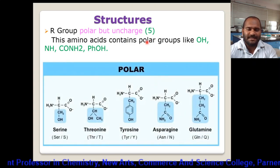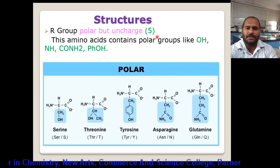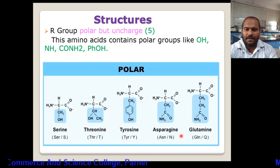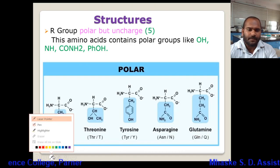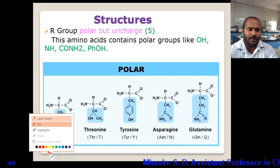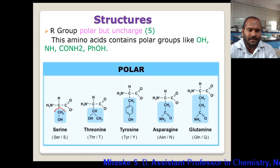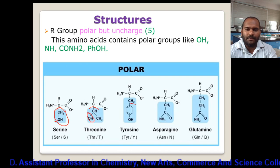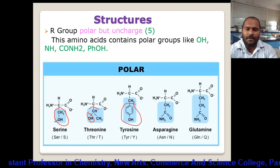The five polar but uncharged amino acids are serine, threonine, tyrosine, asparagine, and glutamine. In serine there is a CH2OH group, so oxygen is the heteroatom. Threonine also has a hydroxy as a heteroatom, and tyrosine has a phenyl hydroxy group.